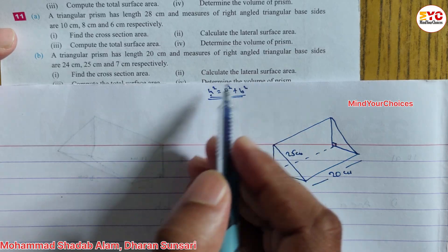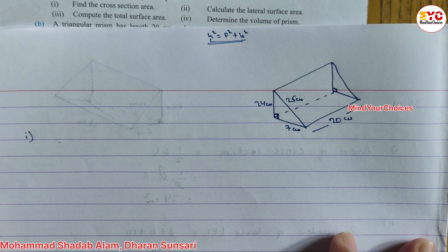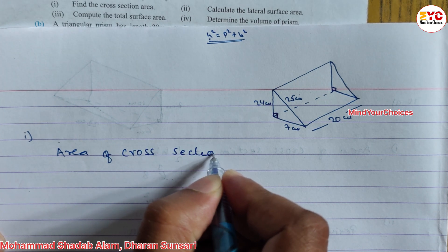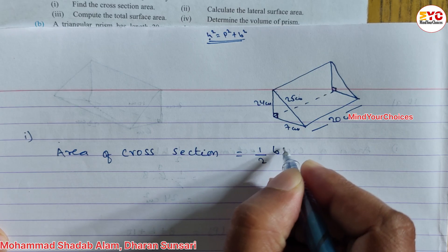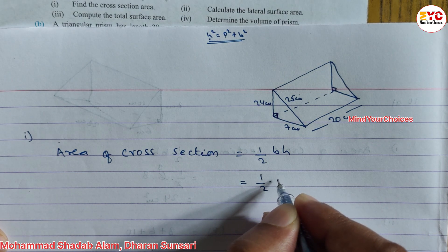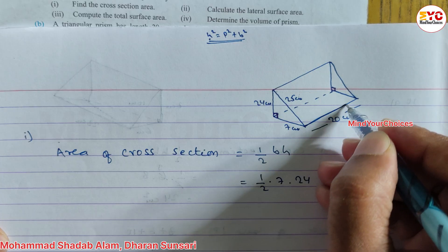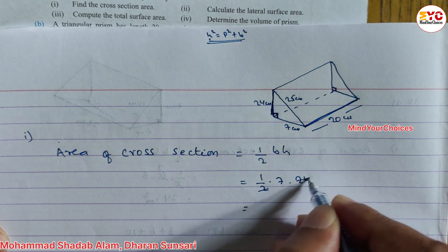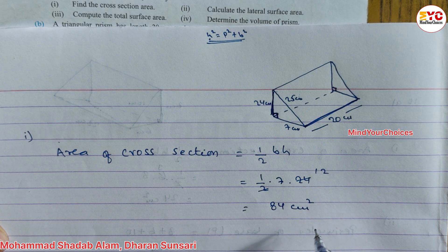We have to find out: area of cross-section, lateral surface area, total surface area, and volume. Number one: area of cross-section means area of base. Our base is a right-angle triangle, so the formula is half base into height: 1/2 × 7 × 24. Calculating: 1/2 × 7 × 24 = 7 × 12 = 84 cm square. Area of cross-section = 84 cm square.